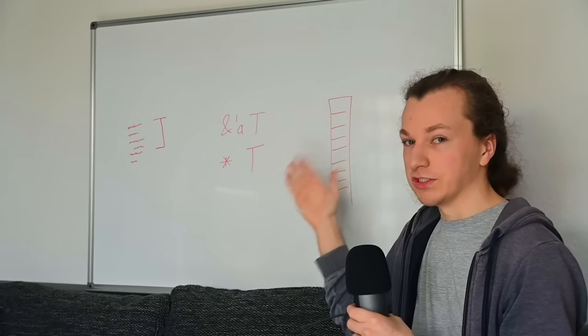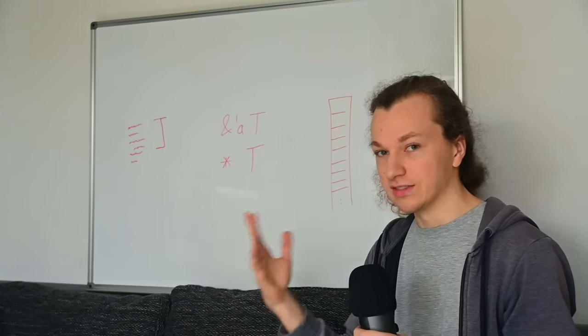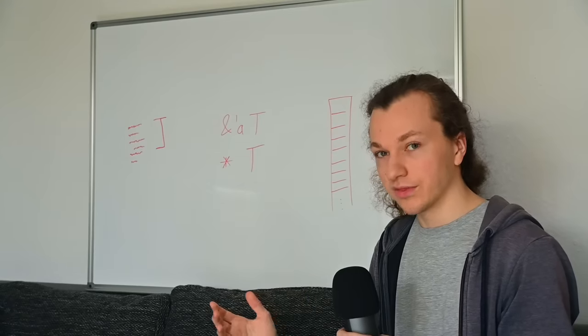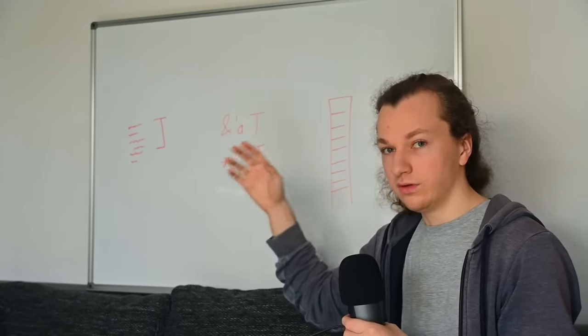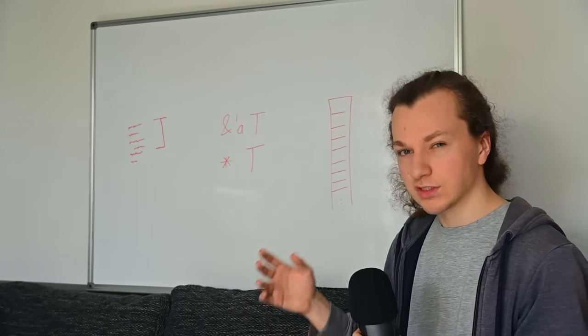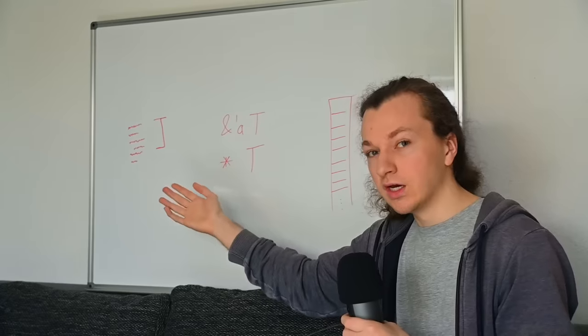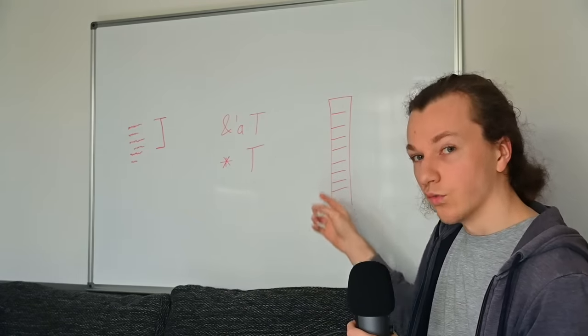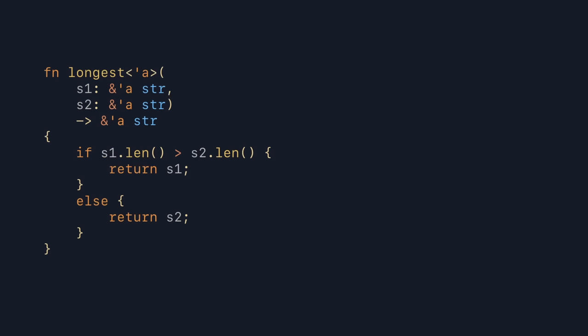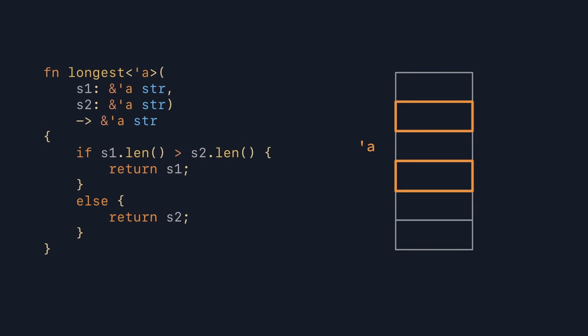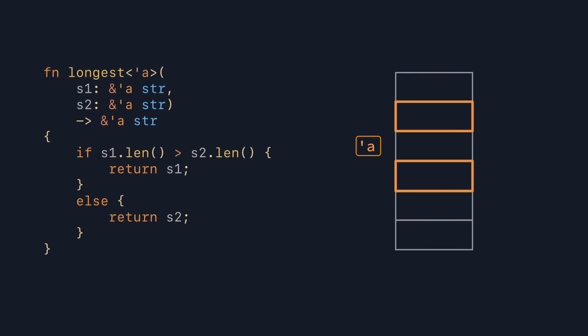A reference really is just a special kind of pointer, special because it has this 'tick A' thing that the compiler uses to validate that the reference never points to invalid memory. Usually we think of 'tick A' as the reference's lifetime — which regions of the code the reference needs to be valid in. But that's only half of the equation. So what if instead of thinking about 'tick A' as when the reference needs to be valid, we thought of it as what the reference can point to — as in which region of memory? Just being able to visualize lifetimes using a familiar concept, namely memory, without having to think about code or time, is why the region model is so useful.